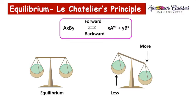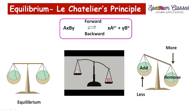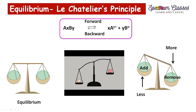To go back to the equilibrium position, we either need to add something to the lighter pan or remove something from the heavier pan. I am showing this animation — this equilibrium position is represented by the equilibrium sign. Le Chatelier's principle suggests that to go back to equilibrium, we add something to the lighter side or remove something from the heavier pan. We are considering the concentration factor here; temperature effects will be discussed elsewhere.